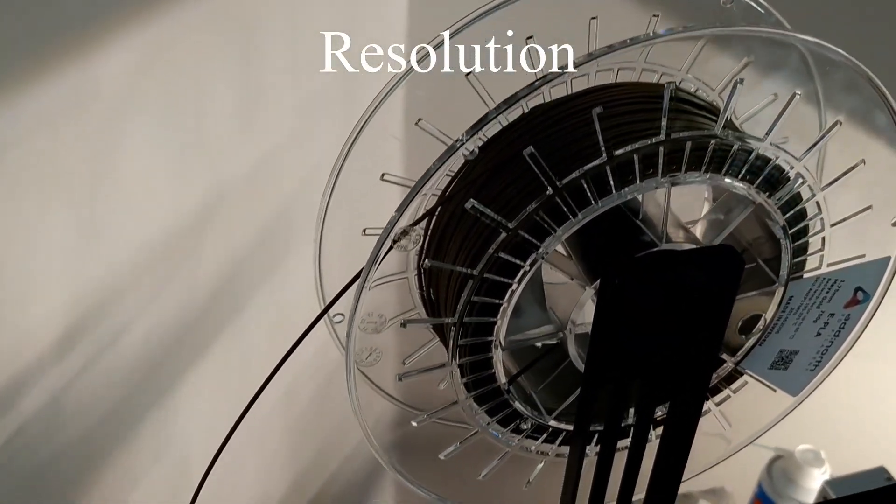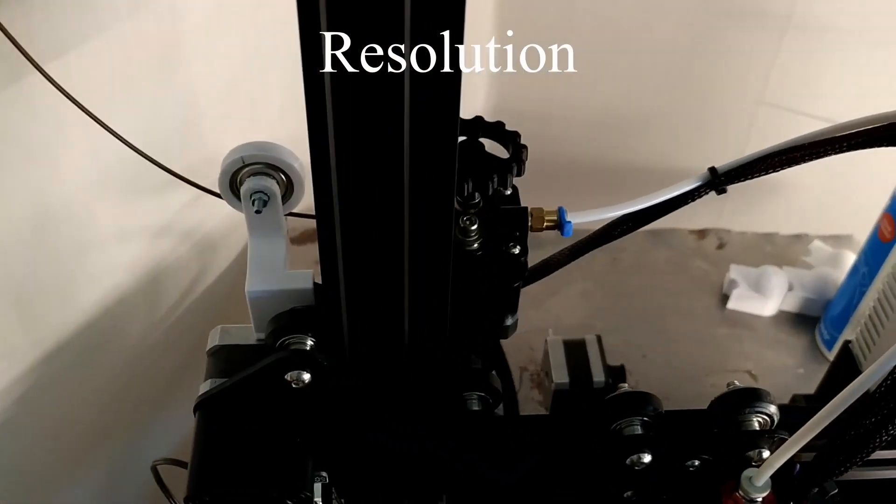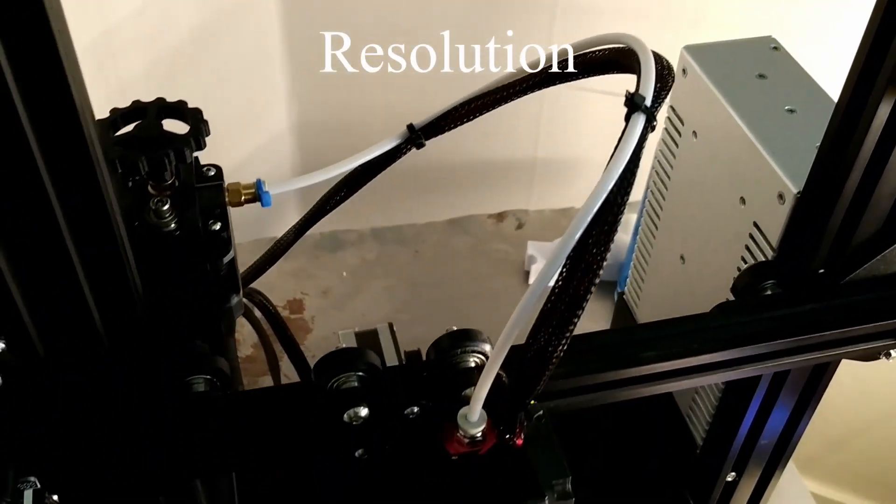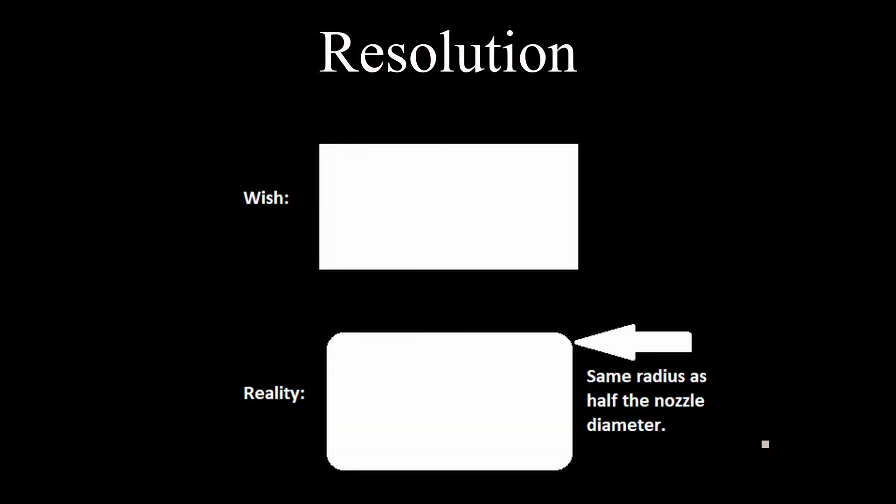The resolution of your print. With a FDM printer, one that uses plastic string filament, that's the common Ender series from Creality, you can never have a perfect 90 degree outer corner. You will always get a radius, that is, half the diameter of the nozzle.